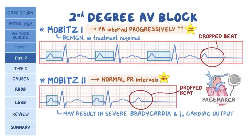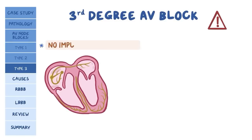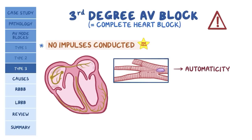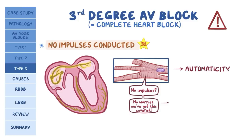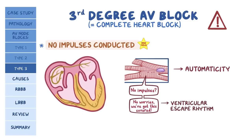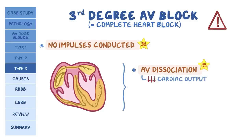Mobitz II blocks can sometimes progress to the dangerous third-degree AV block. In this type, none of the electrical impulses are conducted through the AV node, which is why it's also called complete heart block. Remember that all cardiomyocytes are capable of starting their own electrical activity, a property called automaticity. In third-degree AV block, the ventricles recognize that they're not getting any impulses and respond by generating their own electrical rhythm, called a ventricular escape rhythm. Because the atria and ventricles each have their own pacemakers, they contract independent of one another — called AV dissociation — which can reduce cardiac output dramatically, leading to syncope or even sudden cardiac death.